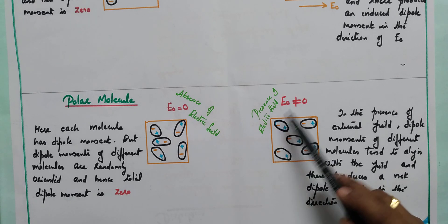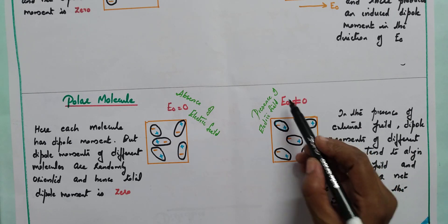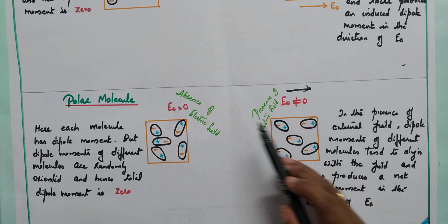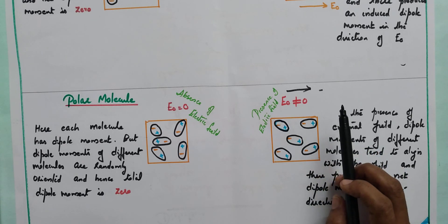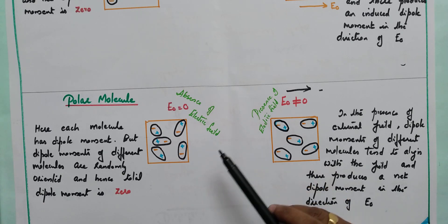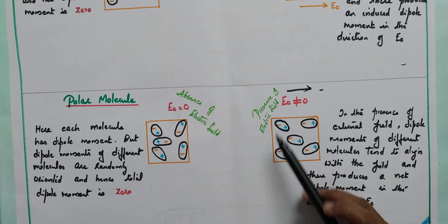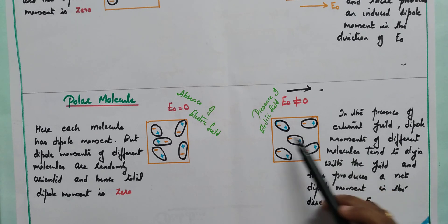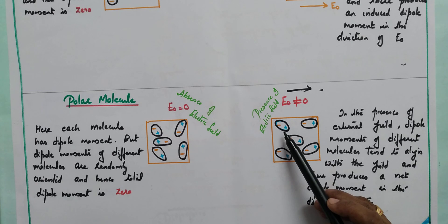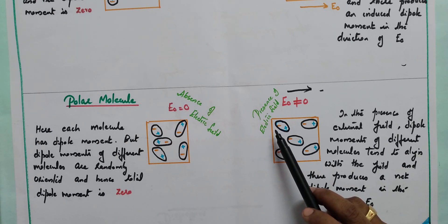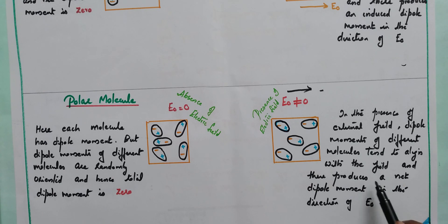When an external electric field is applied — E₀ not equal to zero — with the direction of the external electric field from left to right, the negative and positive charges reorient. They reorient such that negative charges face the positive charge plate and positive charges face the negative charge plate. Hence each molecule has a dipole moment, and the net dipole moment is not equal to zero, producing a net dipole moment in the direction of the external electric field.